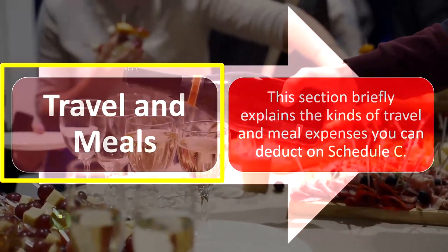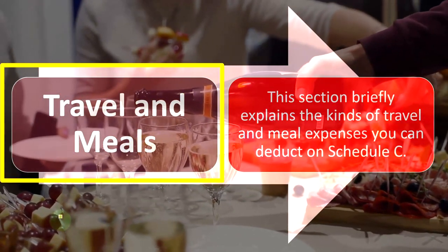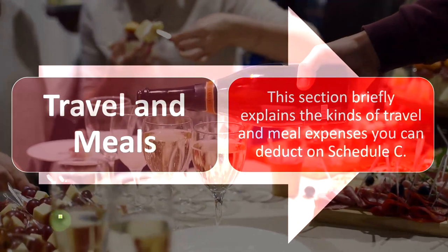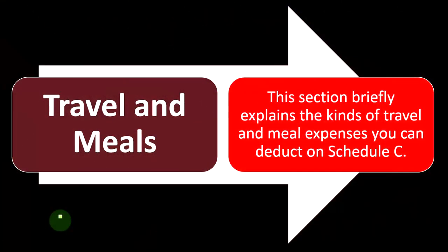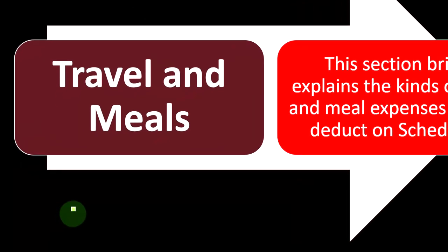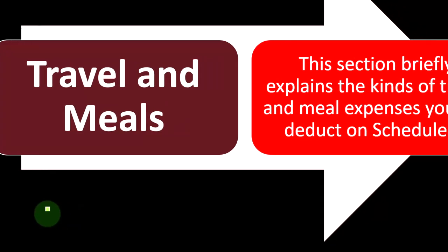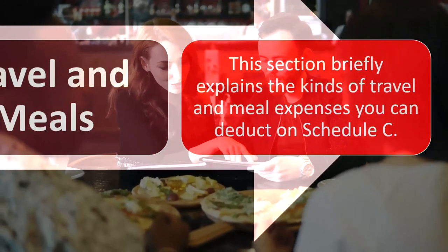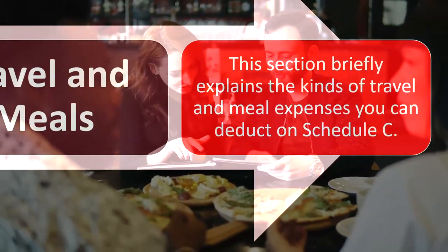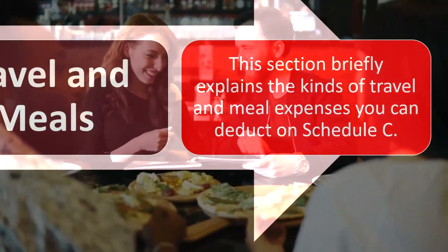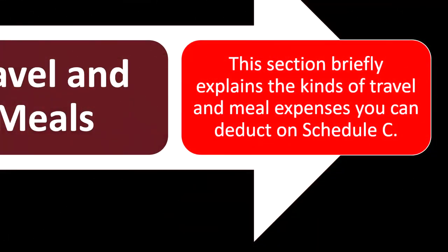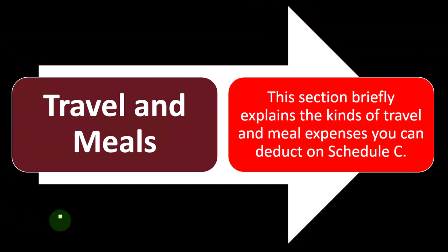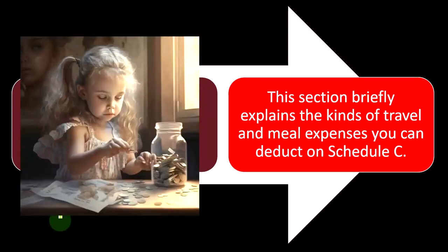Travel and meals is a complicated topic because the general rule is that we can only have a deduction if it's an ordinary and necessary business item. When we dive into the concept of meals and travel, we often have that fuzzy gray line between whether the meals and travel are necessary business expenses or whether they are personal. We've also had changes in the laws related to meals in particular, so we want to make sure we properly allocate travel and meals.